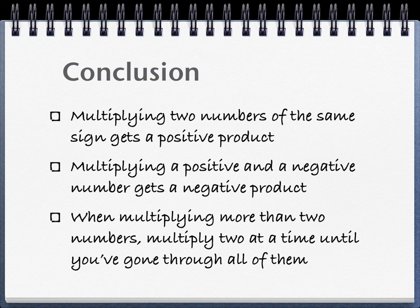So when you multiply two numbers with the same sign, it doesn't matter if the sign is positive or negative, you'll get a positive product. If you multiply one positive number and one negative number, that gets you a negative product. And when you're multiplying more than two numbers, just multiply them two at a time until you've gone through all of them.